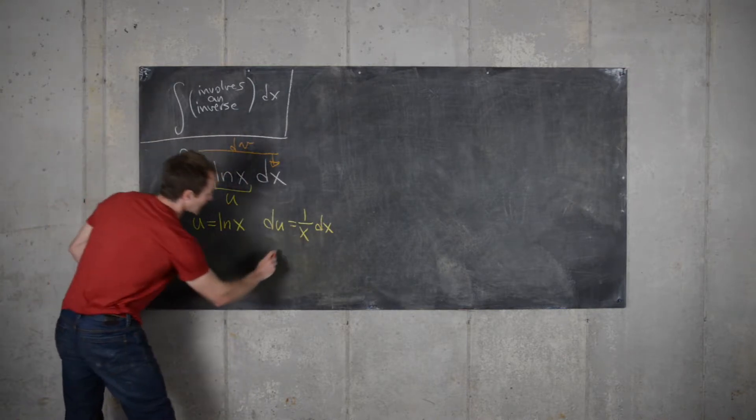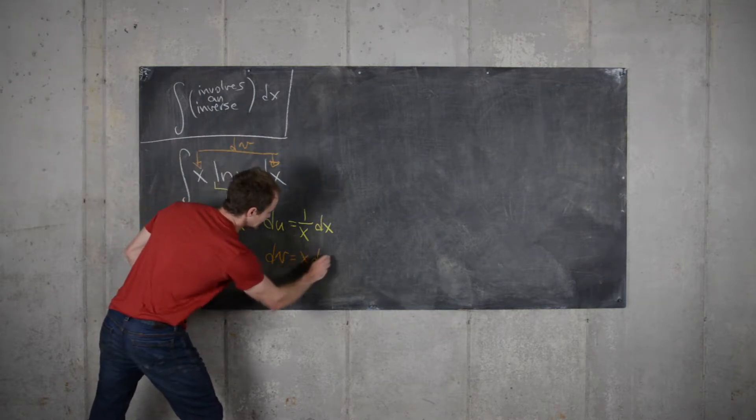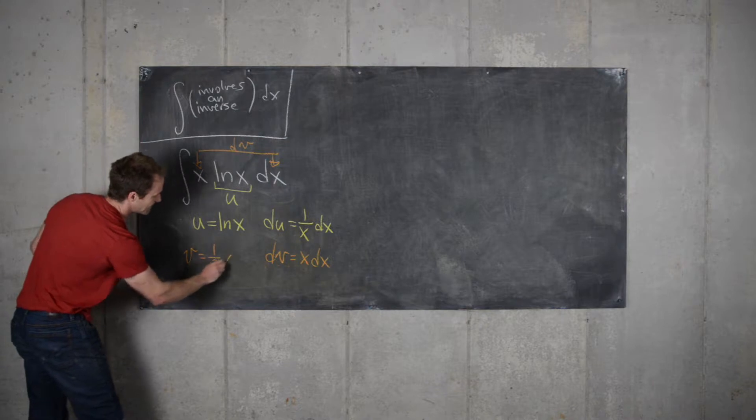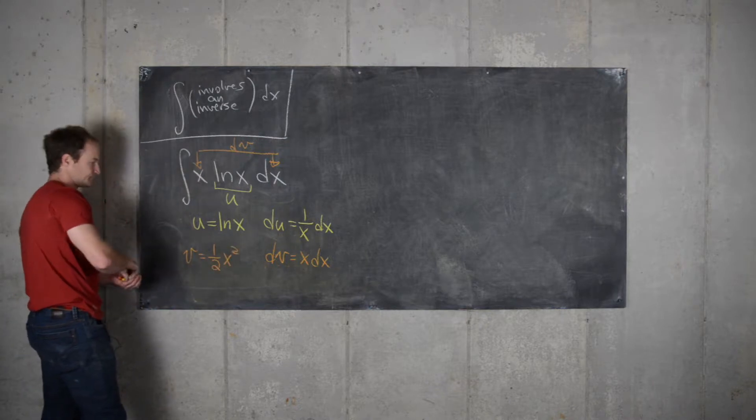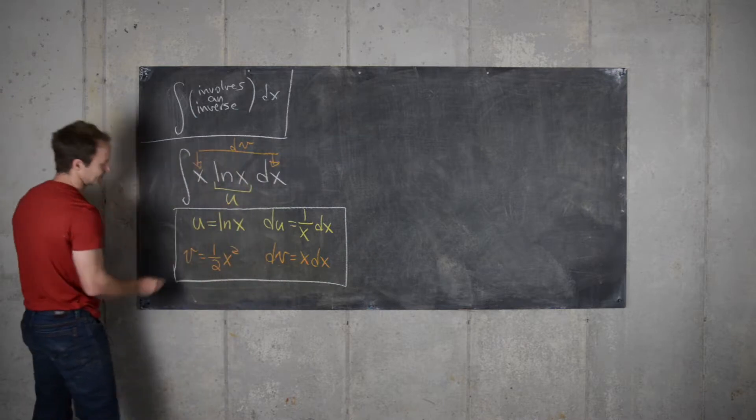And then we have dv equals x dx. So that makes v equal 1 half x squared. And that's our setup for this integration by parts.